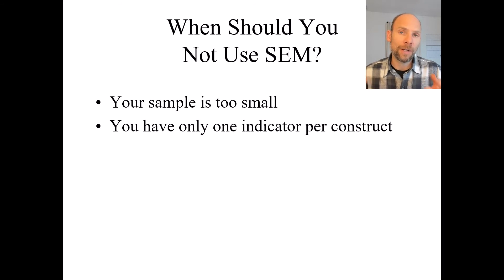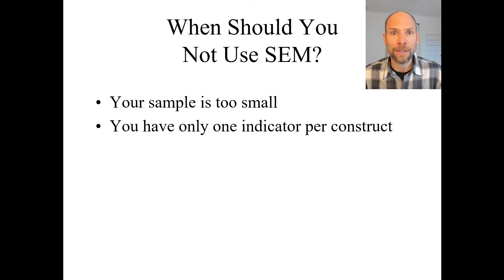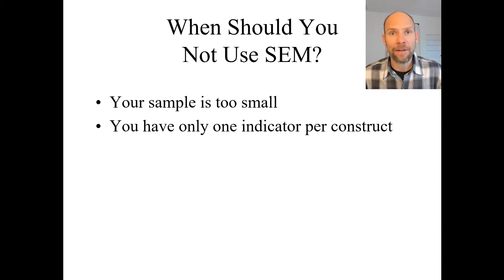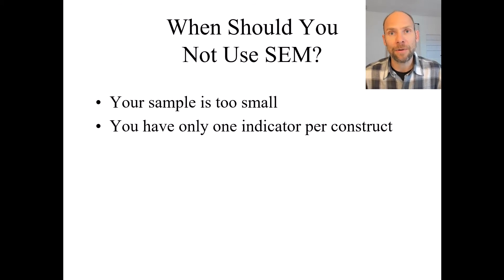So when you have only one indicator, it may be better to use path analysis with observed variables. In particular, when the variables are sufficiently reliable, having a single indicator in a path analysis might give you sufficiently dependable results.